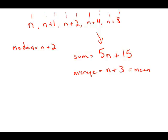And n plus 3 — what do you have to add to n plus 2 to get n plus 3? Obviously, you have to add 1. The mean is 1 bigger than the median. This is answer choice B.